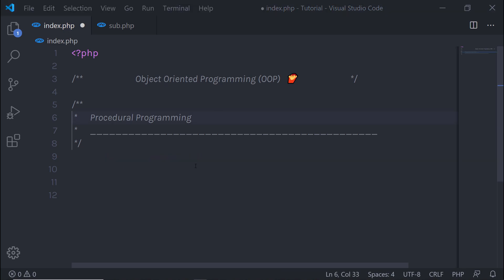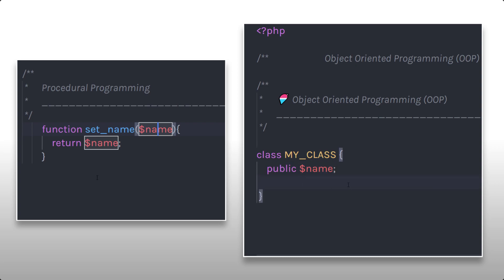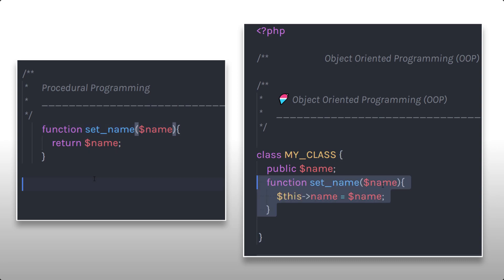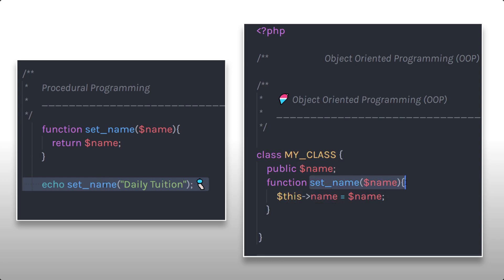Now let me show you how object oriented programming works. In object oriented programming, everything starts with the class. So it starts with the class keyword and then you specify the class name. In this class, you have properties. I am going to first specify a simple property and then create a method. I am going to create a simple method — specify the name of the function, specify the parameter, and then call this property in this function and specify a value to it using the set name function.